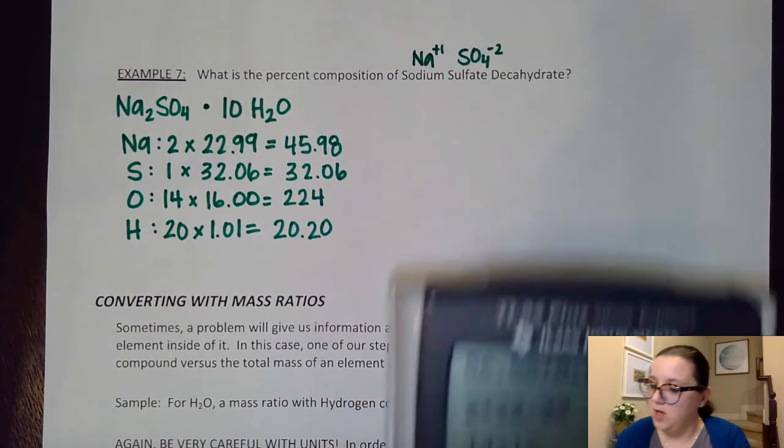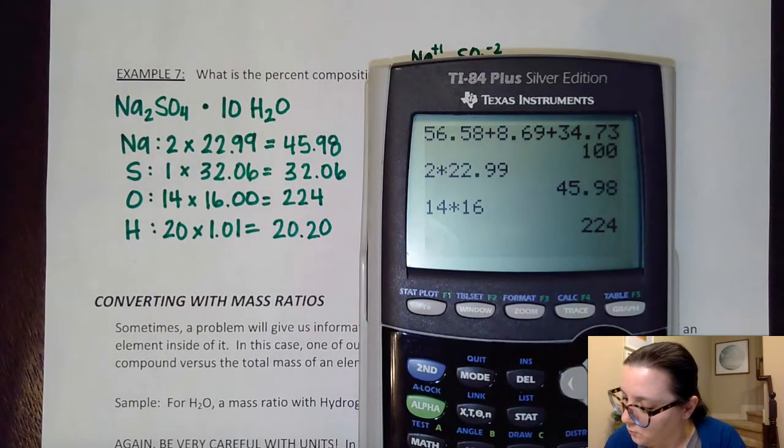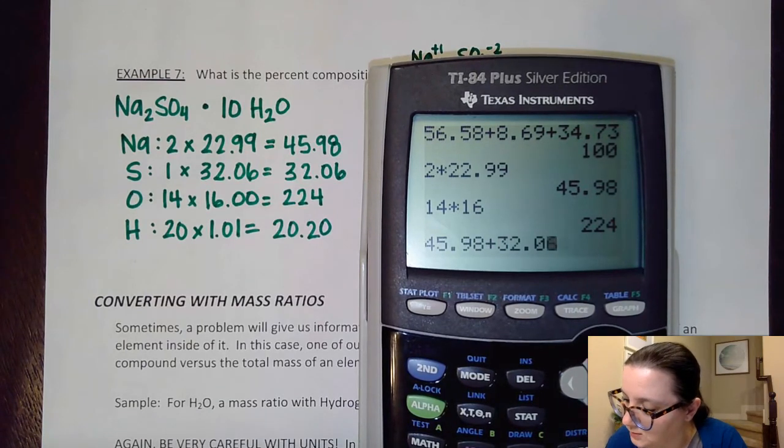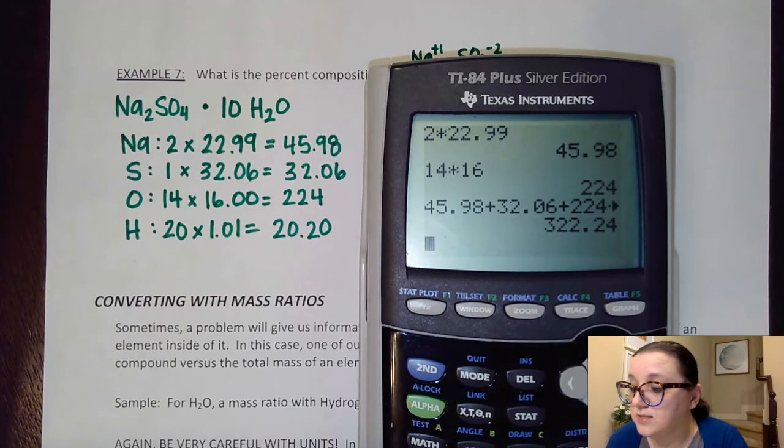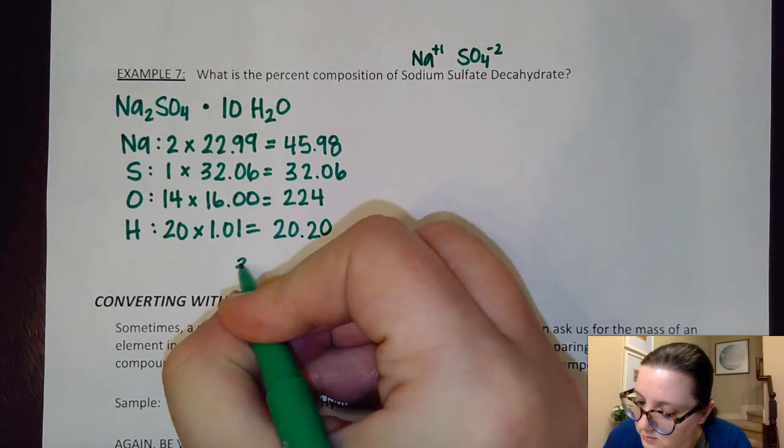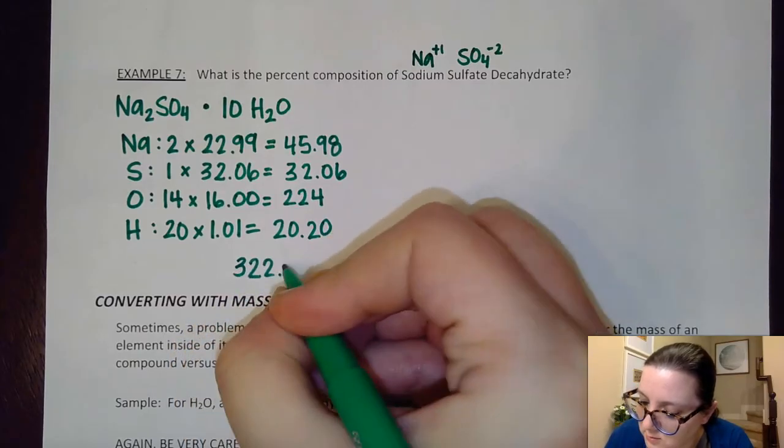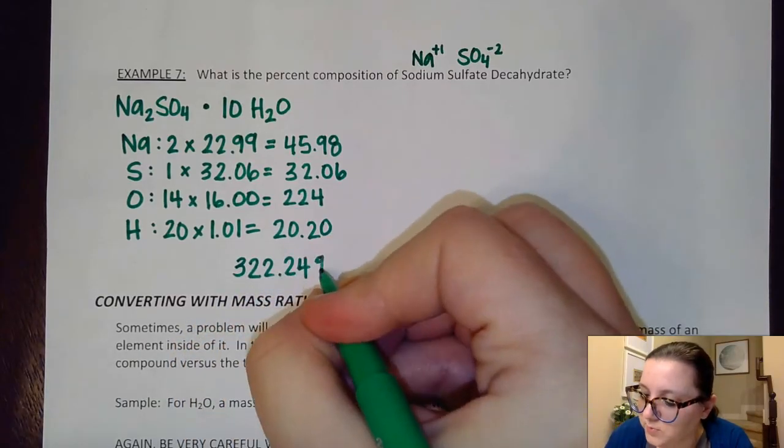All right. So now I'm going to add all of that together. 45.98 plus 32.06 plus my 224 plus my 20.20. And that gets us 322.24 for my total molar mass. And again, that's in grams per mole.